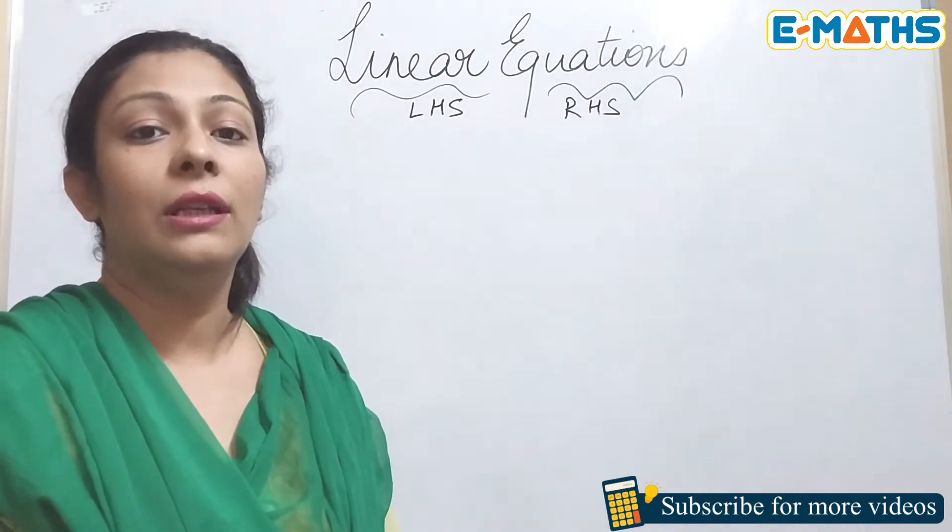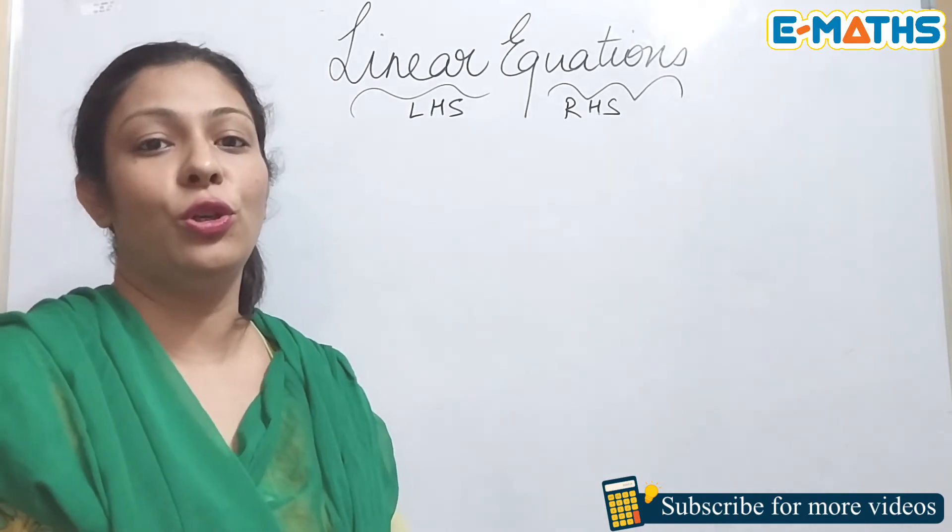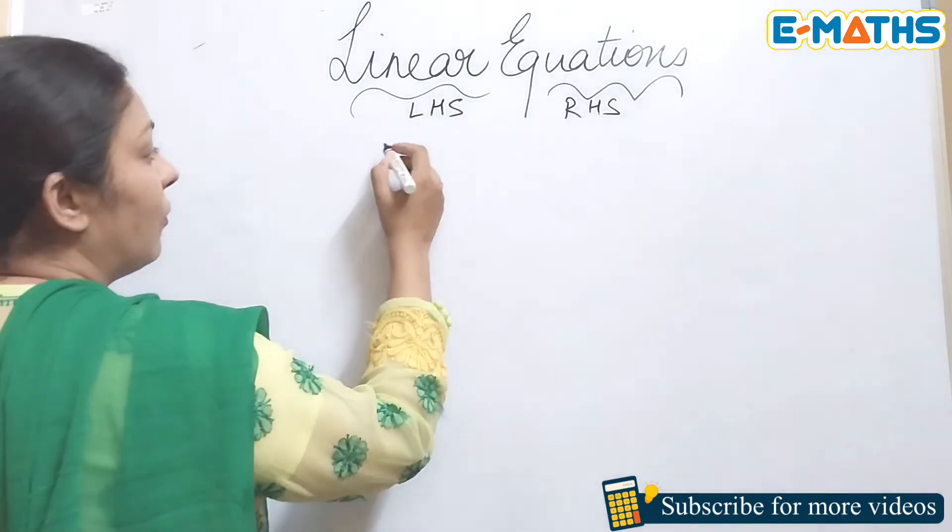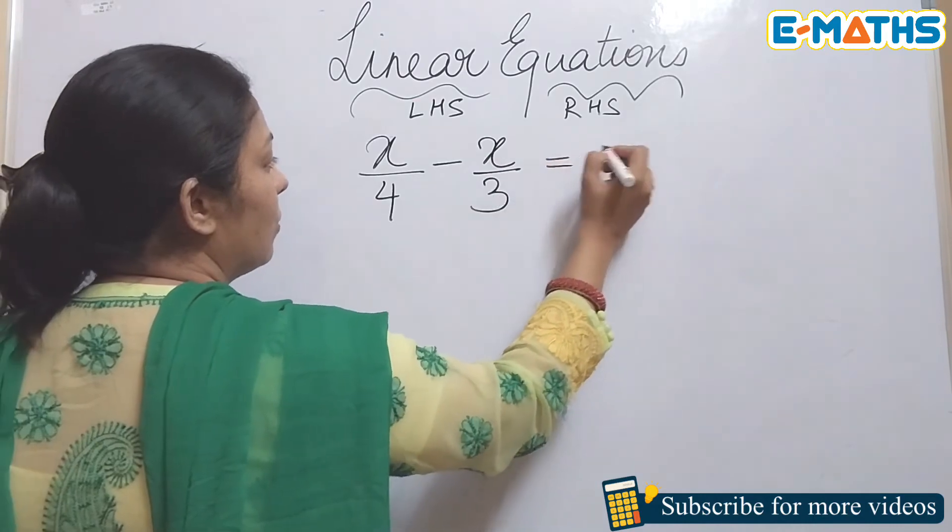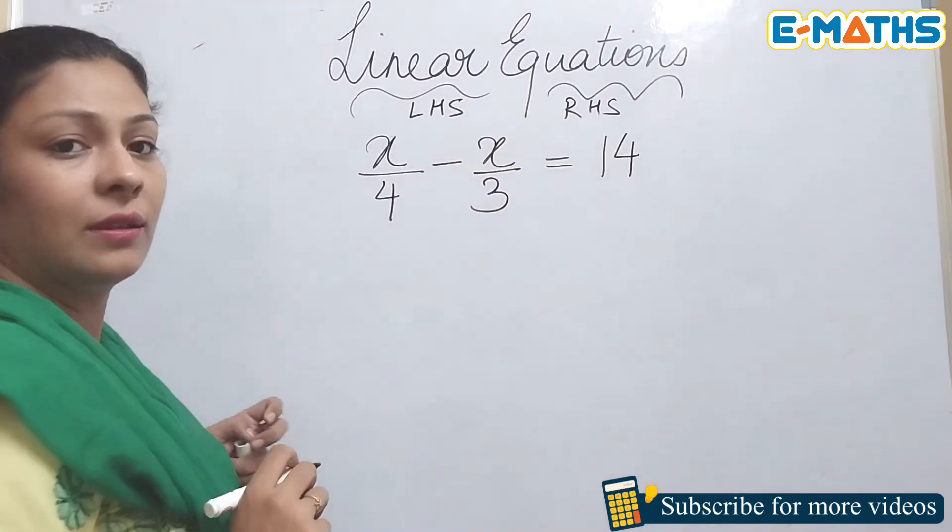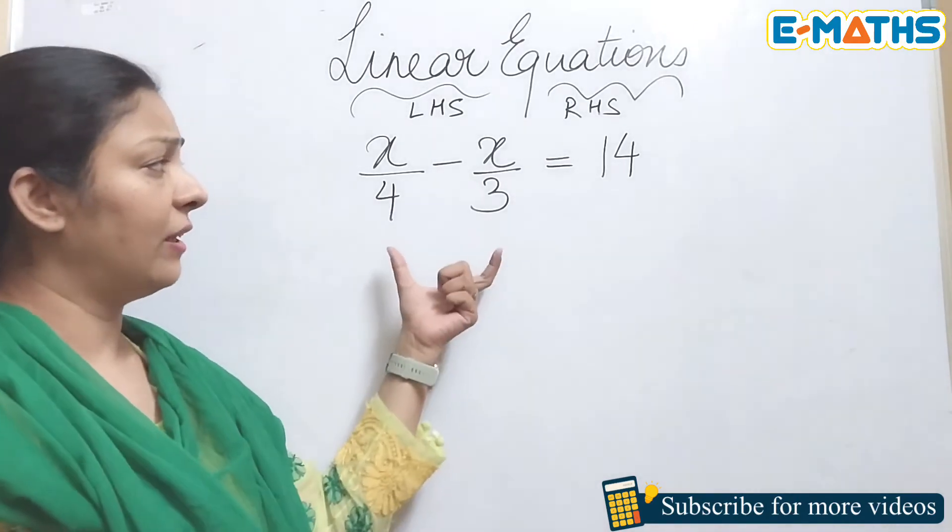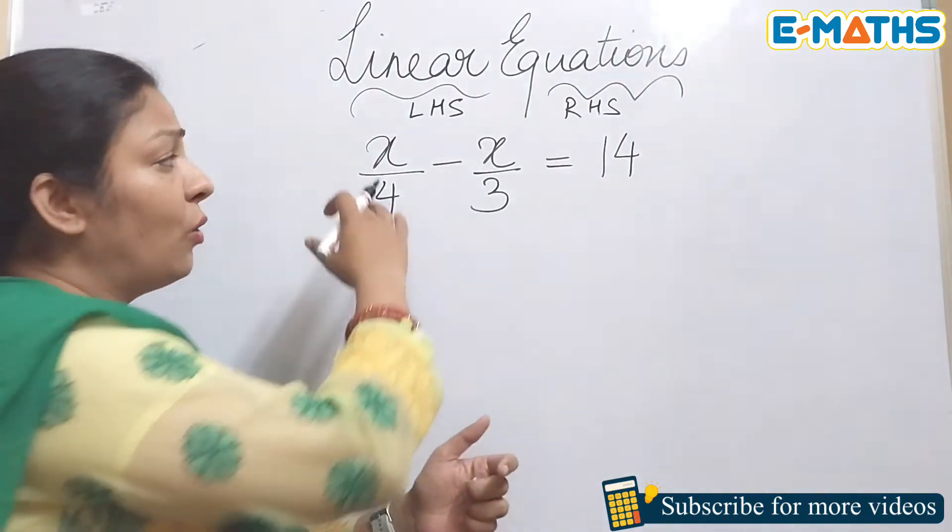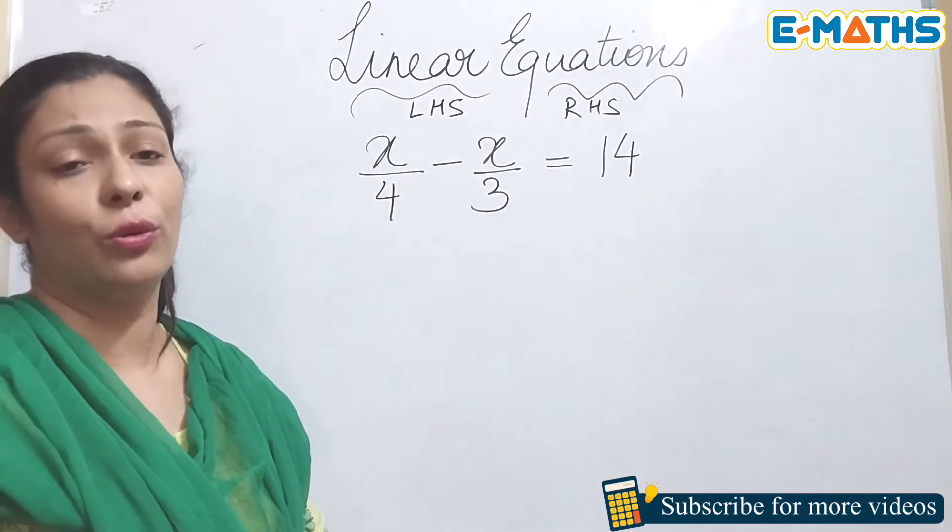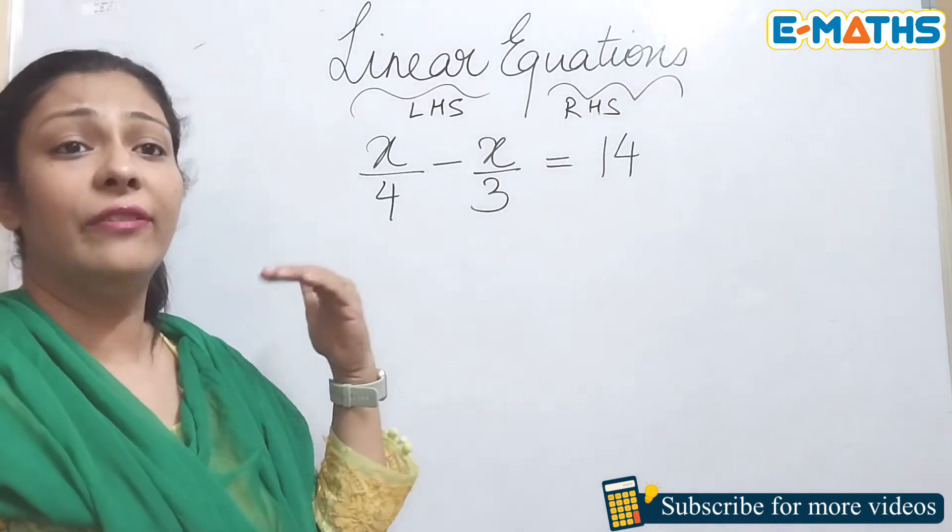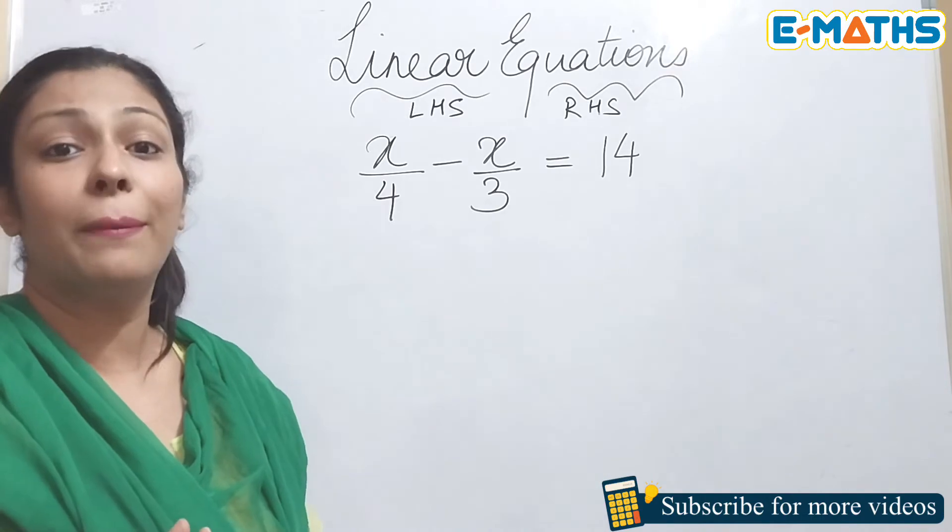Now I'm going to take two rational numbers with x's and show you how to solve such equations. For example, I've taken x upon 4 minus x upon 3 equals to 14. In such cases, children often get confused how to solve this because even if you're taking LCM, there might be confusion how to write the numerators. I'll give you a very simple thing - if you follow that, you will never do your question wrong. In such cases, if you're not able to take LCM properly, you can do this method and that is known as the butterfly method.